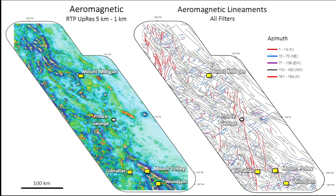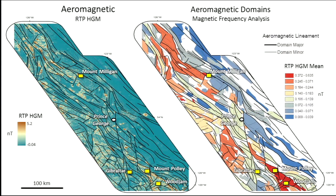This is the building up of the map. One of the principal components is to try to break that grid into different domains. Nothing is done automatically — I manually traced those different domains, looking specifically at areas with similar frequency and similar intensity in the magnetic data. I then populate those different polygons with data extracted from the different data layers.